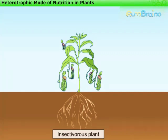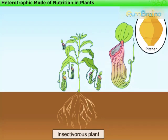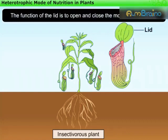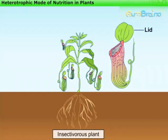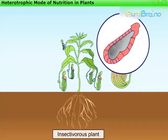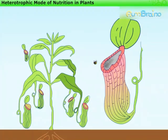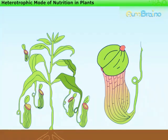For example, the pitcher plant. The leaf of this plant is modified in the shape of a pitcher. The apex of the leaf forms a lid, whose function is to open and close the mouth of the pitcher. Inside the pitcher, there are hairs which are directed downwards. When an insect lands in the pitcher, the lid closes, and the insect gets trapped and entangled in the hairs.